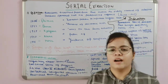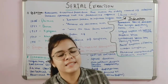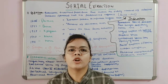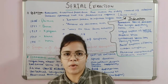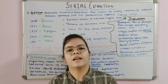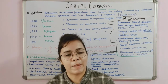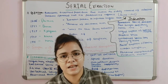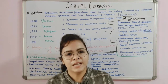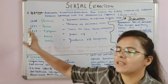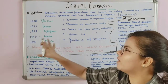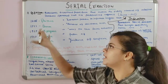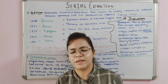In 1941, Hot described serial extraction as 'guidance of eruption' — when you remove certain teeth, the permanent tooth gets space and is guided to erupt into its original position. This was all about the history and background of serial extraction, which is most commonly asked in NEET MDS examinations.